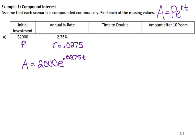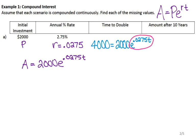If I want to figure out the amount of time it takes for my initial amount to double, I need to first figure out my final amount. If my initial amount is doubling, then my final amount is going to be 2 times my initial amount — so 2 times 2,000 is 4,000. That's what I plug in for A. So I have 4,000 equals 2,000 times e to the 0.0275T. I divide both sides by 2,000, giving me 2 equals e to the 0.0275T.